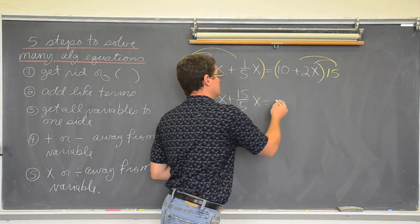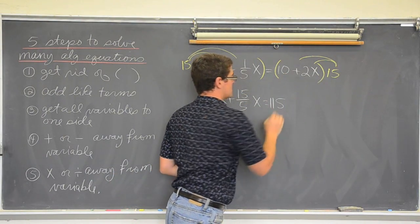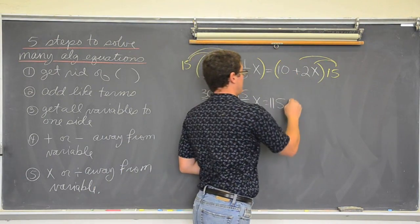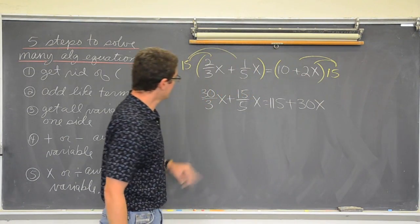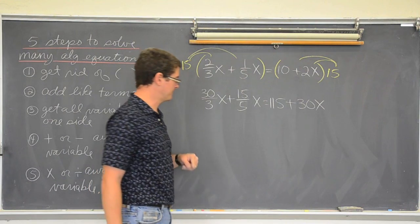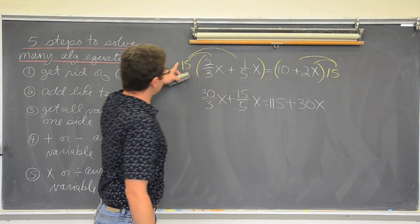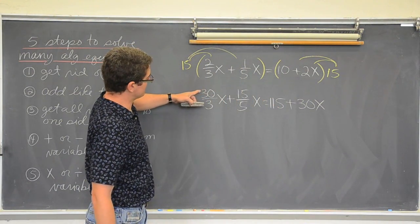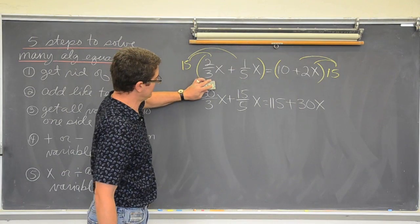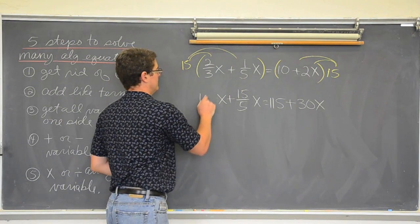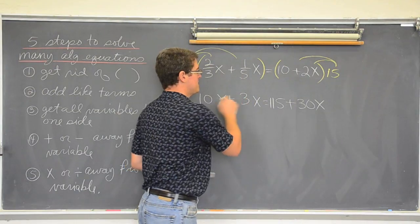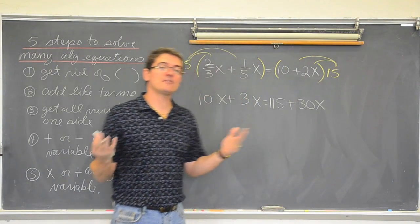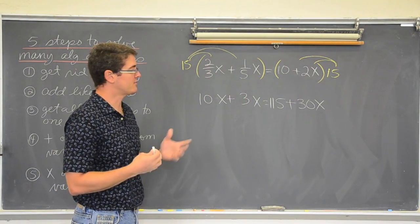Plus, 15 times 2 is 30x. I still have fractions, but not really. Because I multiplied by 15, this will cancel out. 30 divided by 3 is 10. And 15 divided by 5 is equal to 3. Now, all my fractions are gone. And I just have a whole number of answers.